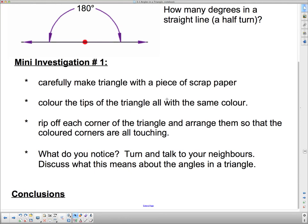So here's a little investigation I want you to do with triangles. I want you to carefully make a triangle with a piece of scrap paper. You'll need to use a straight edge for this. Color the tips of the triangle all with the same color, or just put a dot on them, so that you can tell which were the vertices of the triangle. Rip off each corner of the triangle and arrange them so that the colored corners are all touching. What do you notice? Turn and talk to your neighbors and discuss what this means about the angles in the triangle.